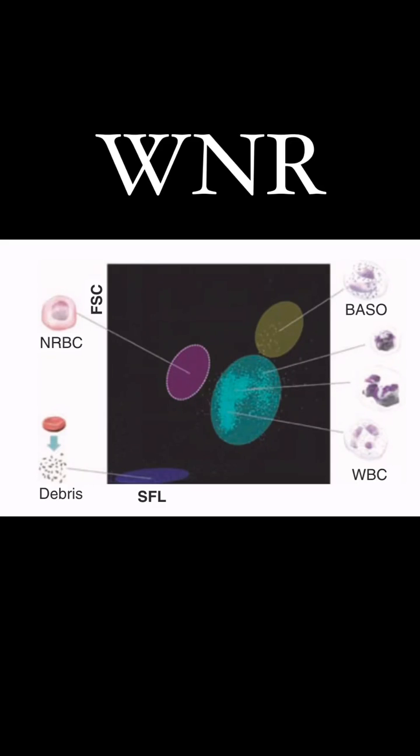Let's look at the image. In these reports, apart from forward scatter and side scatter, there is one more parameter: SFN, which is side fluorescence. This measures the fluorescence intensity. Nucleated RBCs do not have fluorescence, so they appear on the extreme left, whereas WBCs are fluorescent so they appear on the right, and basophils are very fluorescent so they appear on the extreme right. That's how we separate them.